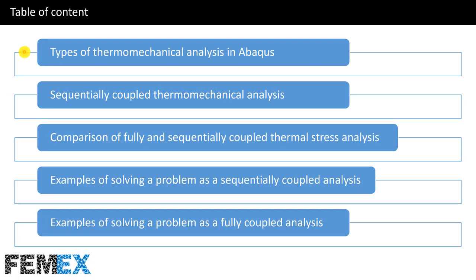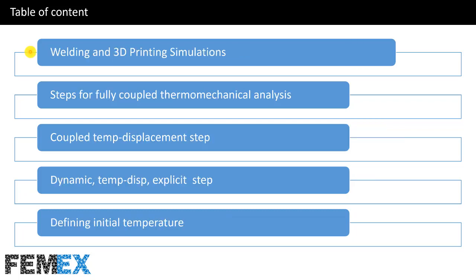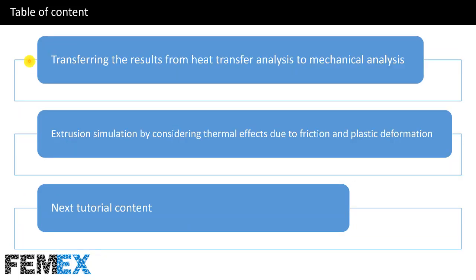This is the table of contents. I will talk about types of thermo-mechanical analysis in Abaqus, sequentially coupled thermo-mechanical analysis, comparison of fully and sequentially coupled thermal stress analysis, examples of solving a problem as a sequentially coupled analysis, examples of solving a problem as a fully coupled analysis, welding and 3D printing simulations, steps for fully coupled thermo-mechanical analysis, coupled temp displacement step, dynamic temp explicit step, defining initial temperature, transferring the results from heat transfer analysis to mechanical analysis, extrusion simulation by considering thermal effects due to friction and plastic deformation, and next tutorial content.